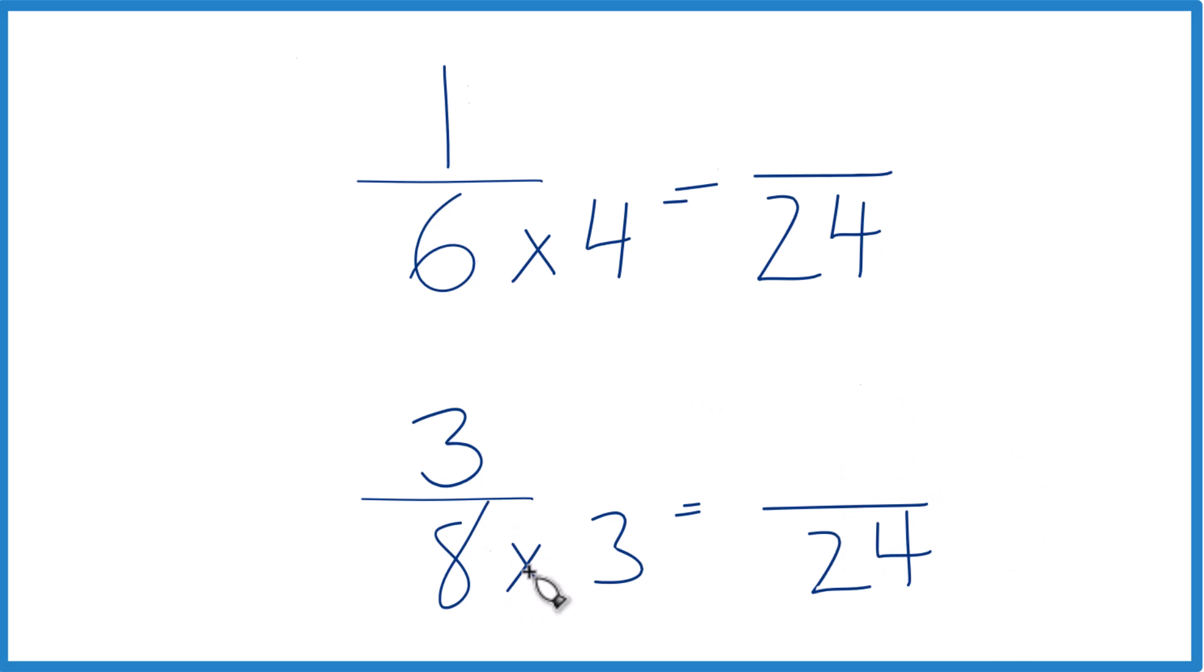Since I multiplied the denominator by 3 here, I do need to multiply the numerator by 3, because 3 over 3 is just 1. So I'm multiplying by 1. I don't change the value, just the way it's written.